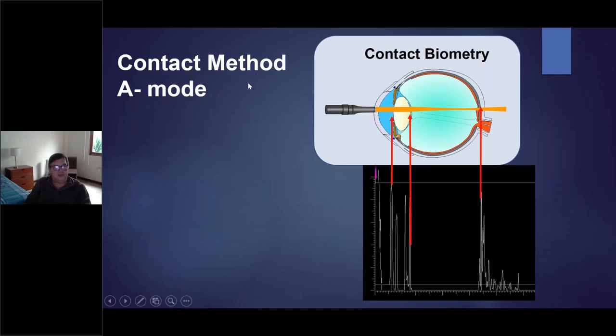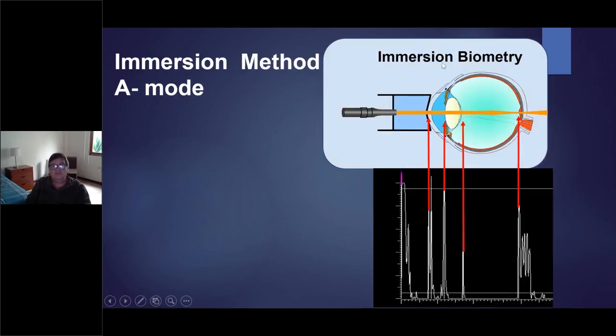When you make the contact method with A-mode, the first echo is this. You are in the interference zone. Then you can see the cornea - you can't, you cannot. There is no cornea here. You suppose that the cornea is here, but it only depends if you are far from the cornea or you are pressing the cornea or deforming the cornea, but you are not sure where is the cornea. And it's very important, the anterior chamber depth, to estimate the position of the lens.